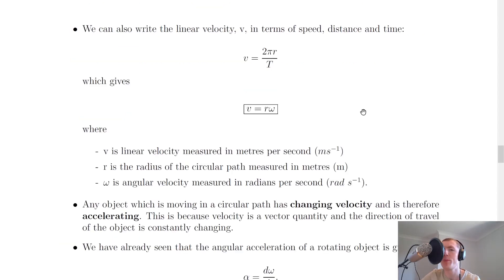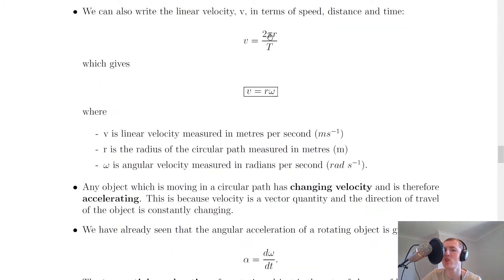Just like we wrote omega equals two pi over T for angular velocity, we can write linear velocity v in a similar way using speed equals distance over time. For one full revolution, the linear distance is two pi r — the circumference of the circle — giving v equals two pi r over T. Replacing two pi over T with omega, we arrive at v equals r omega, where v is linear velocity in meters per second, r is the radius in meters, and omega is angular velocity in radians per second.